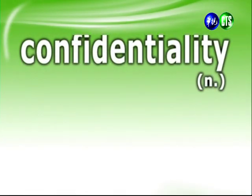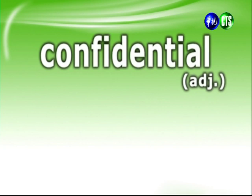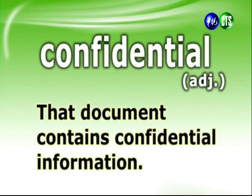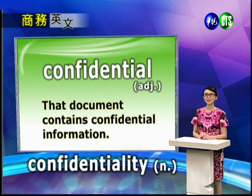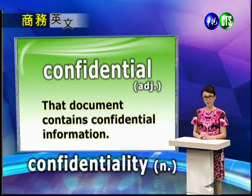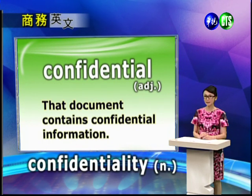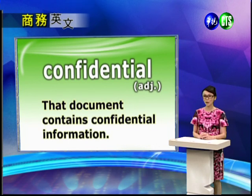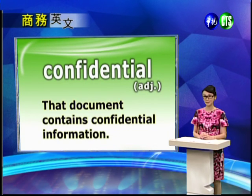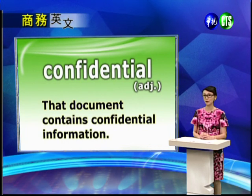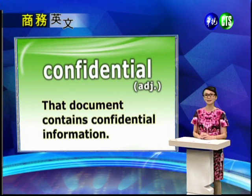那我们来看一下下一个单字：Confidentiality. That document contains confidential information. Confidentiality 是机密，它是名词，形容词是 confidential，机密的、保密的。这句话意思是说，the document——document 就是文件——contain 是包含，那个文件包含了 confidential information，就是机密的讯息，也就是不能够泄露给其他人知道的。